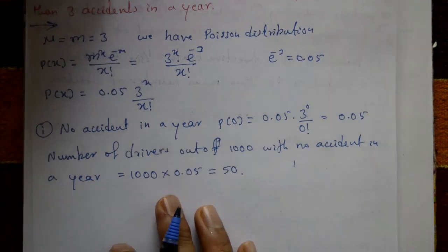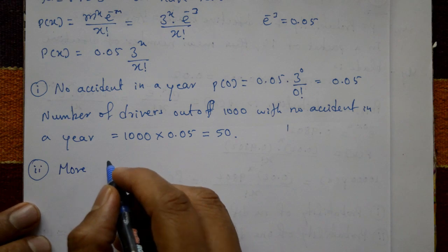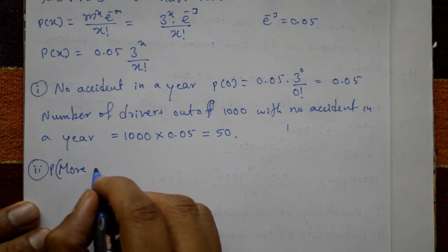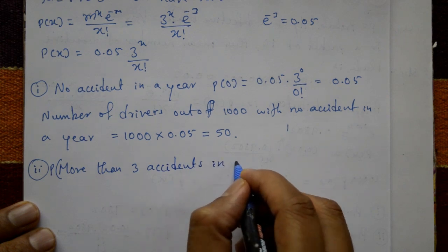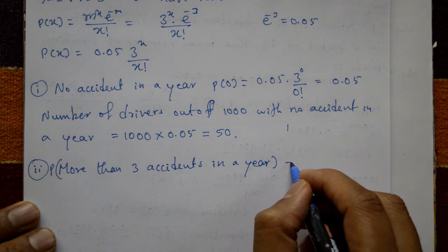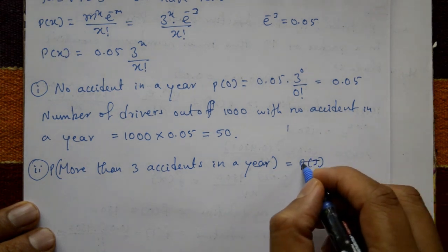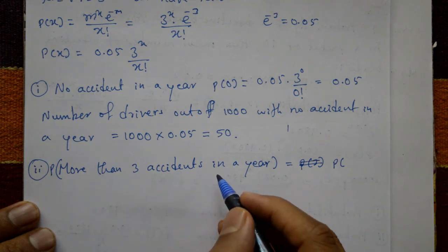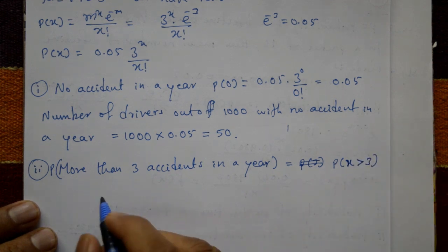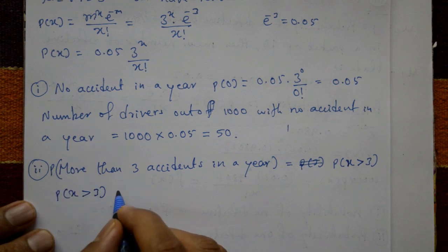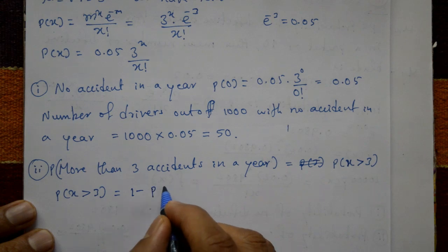Case two: more than three accidents in a year. The probability of more than three accidents means P(x greater than 3). The number of accidents could be four, five, six, seven, eight and so on. So it is better written as one minus P(x less than or equal to 3).